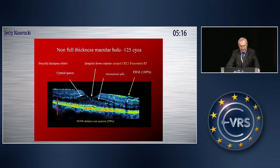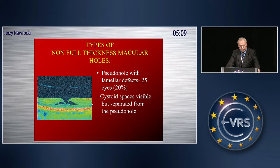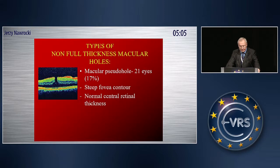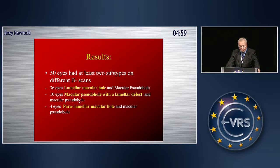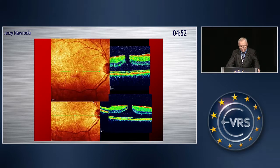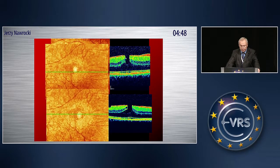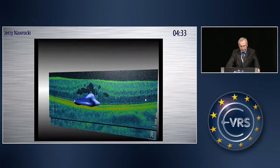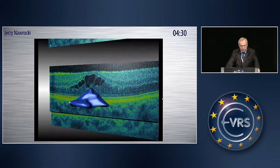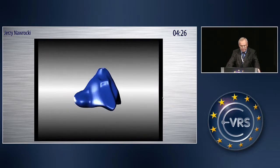On the left side you see classical epiretinal membrane, and here you see LHEP. Looking at central B-scans, we may have pseudo holes with lamellar defects, macular pseudo holes, para-lamellar macular holes, and lamellar macular holes. We found that in many eyes, at least two subtypes are present at different B-scans — pseudo hole and lamellar hole on the same day examination, in the same eye, only one millimeter apart. We produced a model of the lesion and found it is an amorphous lesion; the difference is only where the B-scan is taken.